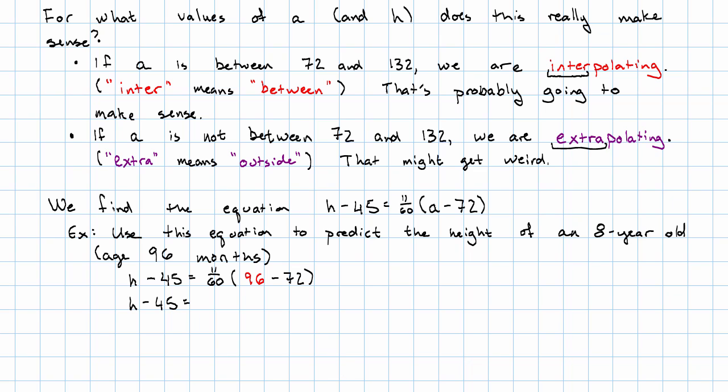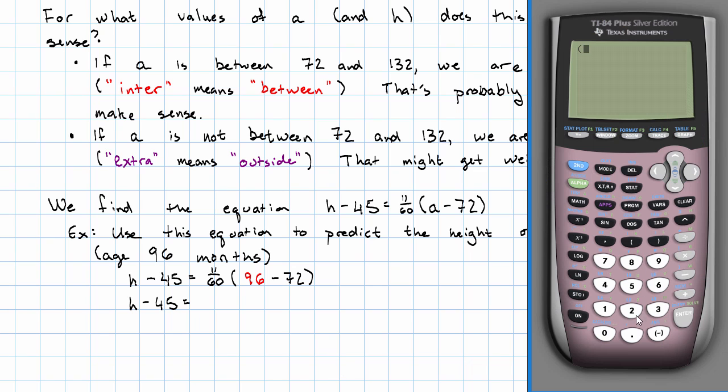I'm just going to enter my 11 sixtieths times my 96 minus 72. That's 4.4.